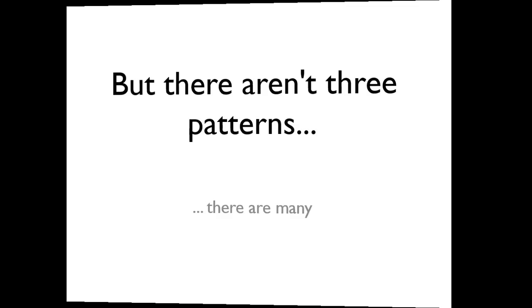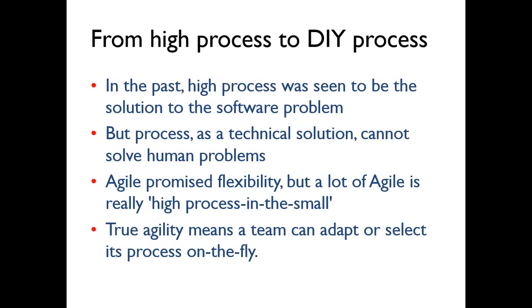The issue we had in the past was that technical people and most IT folk are technically oriented. High process was seen as a solution to the software problem, but the software problem isn't a technical problem — it's a people problem, and process as a technical solution cannot solve human problems. Agile has really shaped up our world, but I think it's an interim situation. I think we're moving towards true agility with a small 'a,' where teams can adapt and select and evolve their process on the fly depending on circumstances.